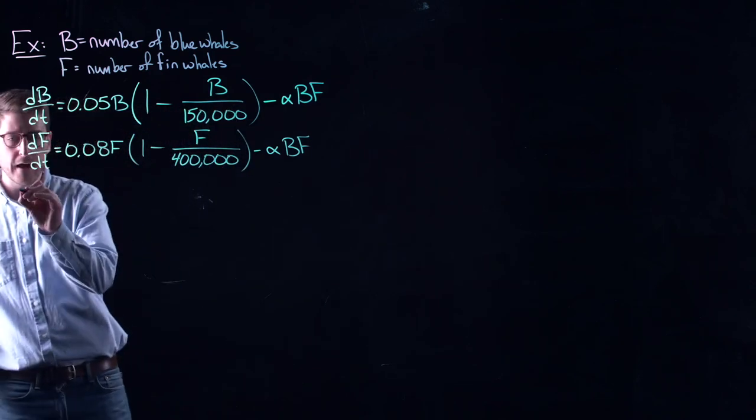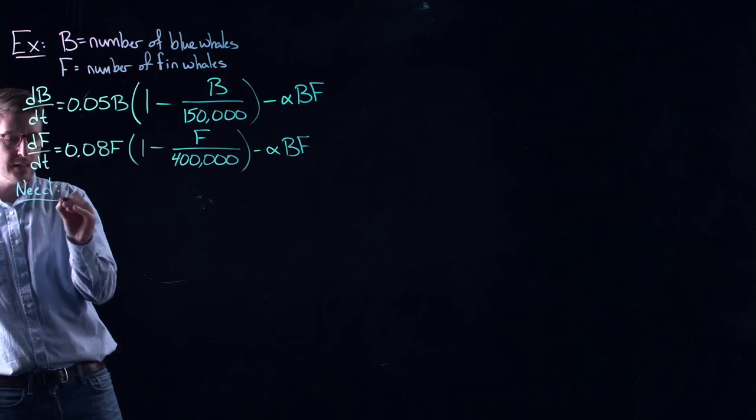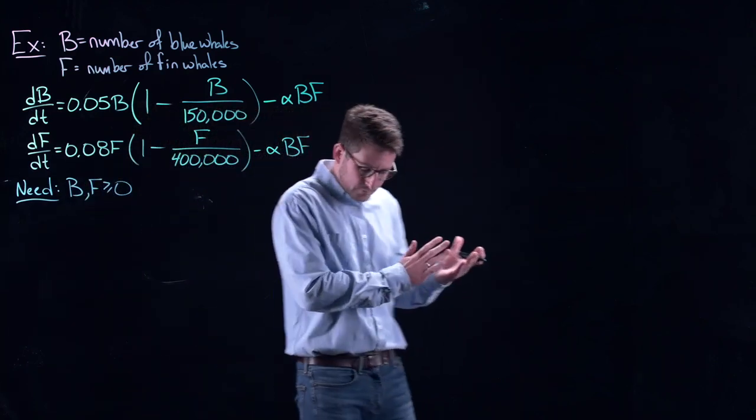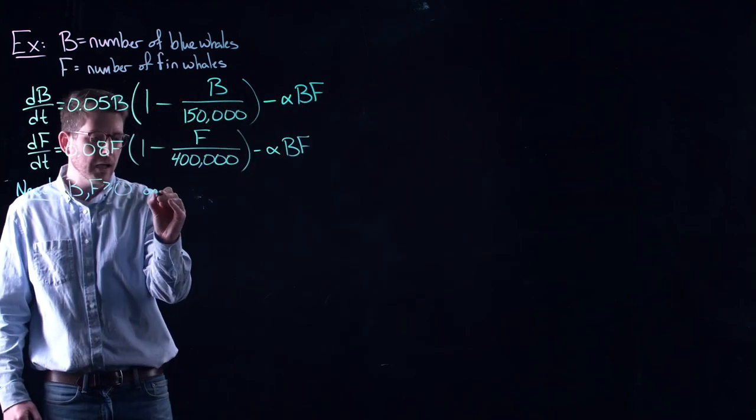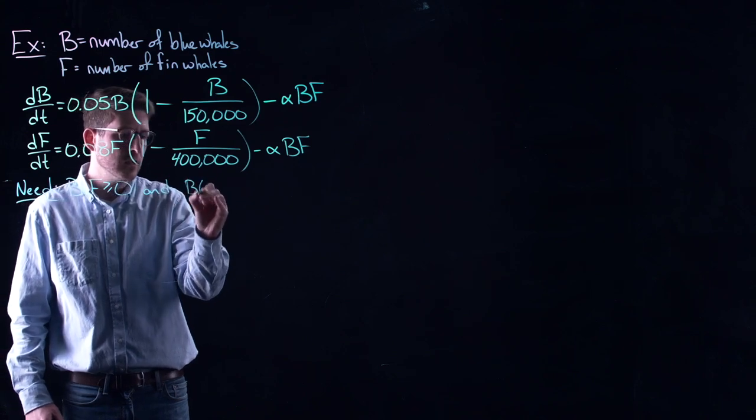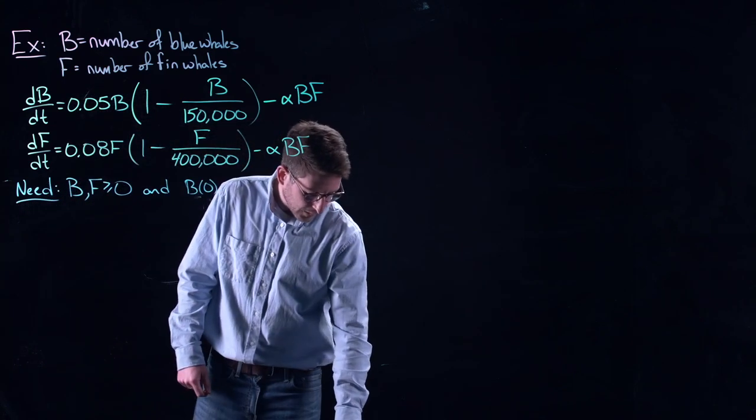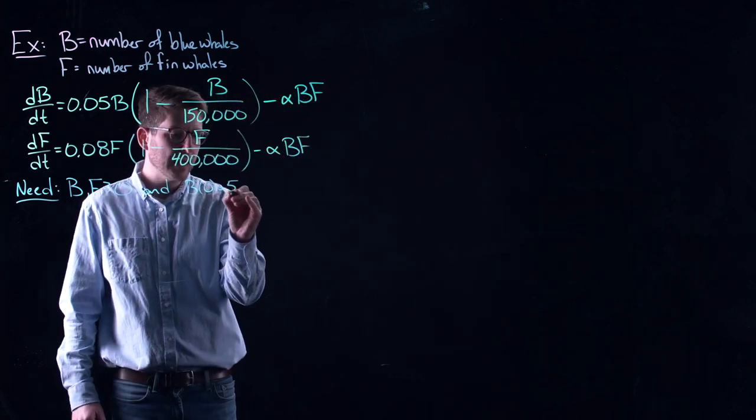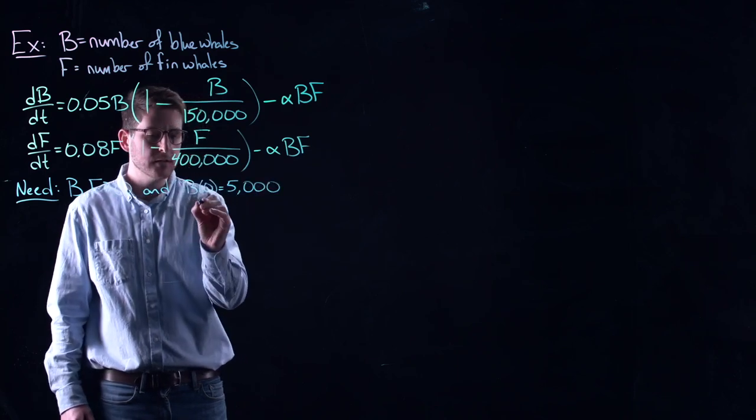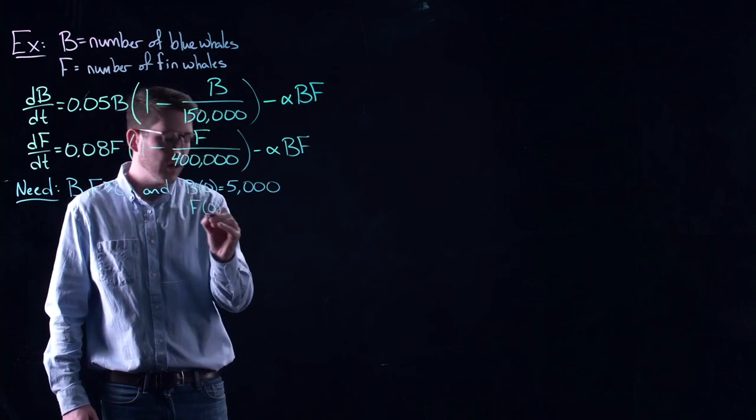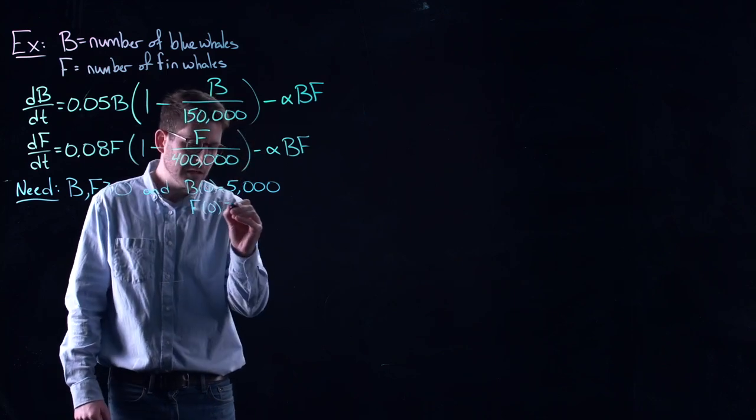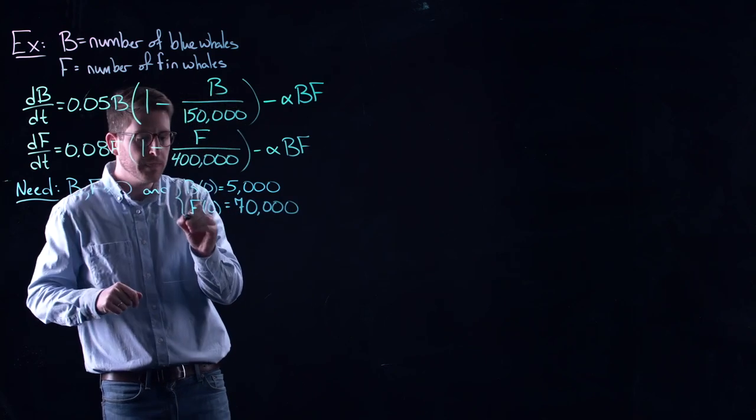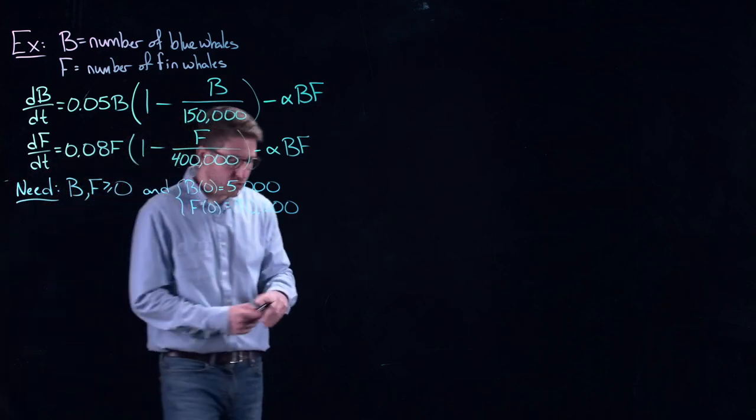Now, we need to have our state space in this case, B, F is greater than or equal to zero. These populations have to be non-negative. And also we have some initial conditions. Let's imagine that due to maybe a century or more of whaling that we start with not that many blue whales, 5,000 blue whales. And similarly for fin whales, let's imagine we only have 70,000 of them. So we're really far away from the carrying capacity of our habitat.